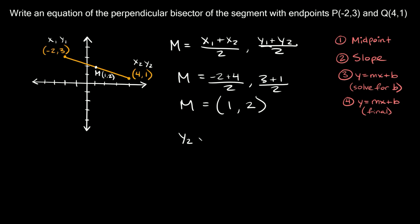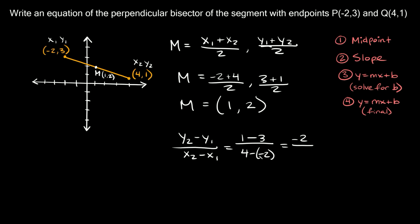To find the slope we use the difference in the y's over the difference in the x's — that is, y₂ minus y₁ over x₂ minus x₁. That gives us 1 minus 3, over 4 minus negative 2. That equals negative 2 over 6, which simplifies to negative 1/3. That is the slope of this line.